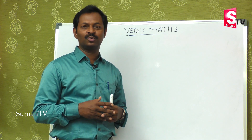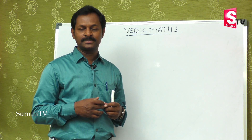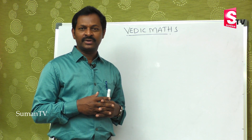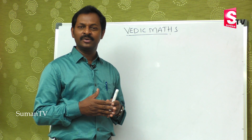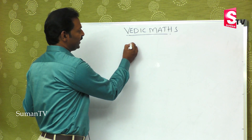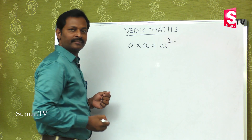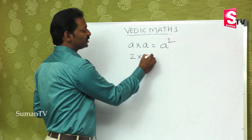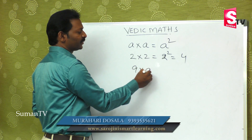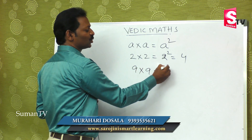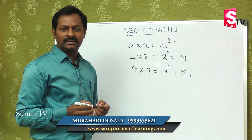In regular school method, the multiplication we do is somewhat different. Here we focus on squares — when you multiply a number by itself, that is a square. For example, a multiplied by a is a square. So 2 into 2 is 2 square, equal to 4. And 9 into 9 is 9 square, which is equal to 81.